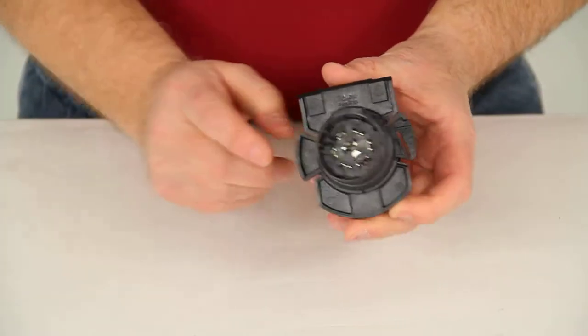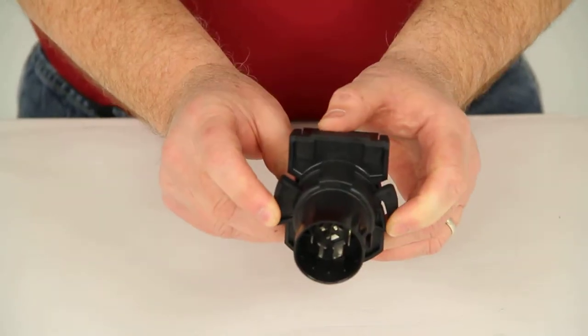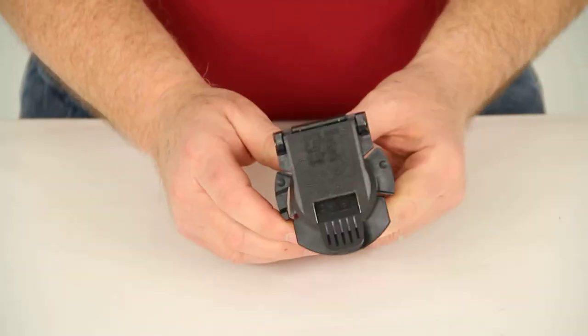You would take this and these tabs right here, you just line it up, put it in, twist it into this position that would lock this onto your rear bumper.